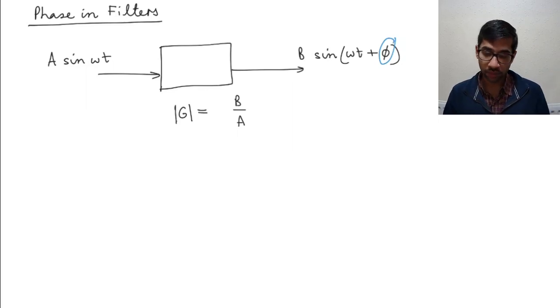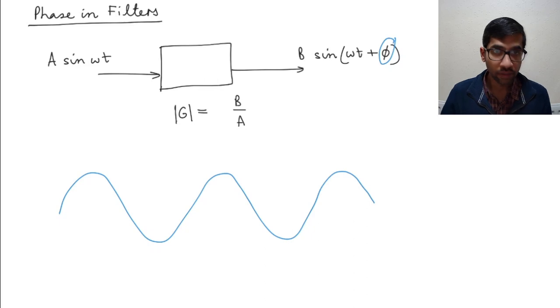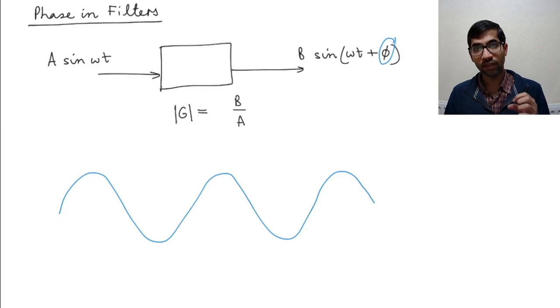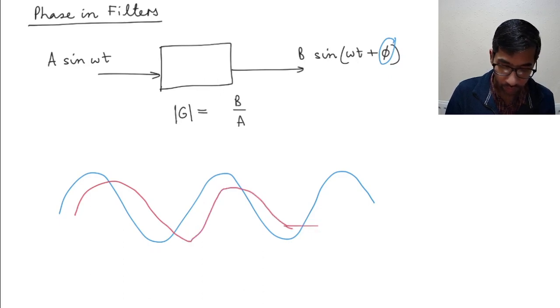So if you give a sine wave input, let's try it here. So if I give a sine wave like this, the output is not going to be the exact same signal with a different amplitude, but it's going to be a signal that is shifted in time. So it's going to be something like this, right?